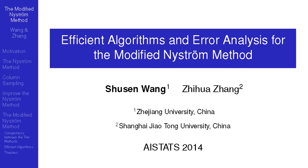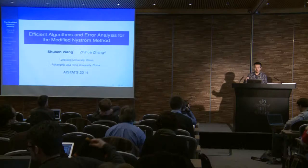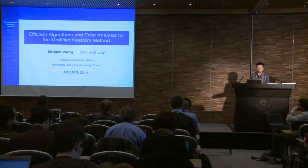I'm Shusen Wang from Zhejiang University. This is joint work with Zhihua Zhang. The title is 'Efficient Algorithm and Error Analysis for the Modified Nystrom Method.' The Nystrom Method is a kind of kernel approximation method for speeding up kernel methods. In our previous work, we proposed a variant called the Modified Nystrom Method. It is more accurate, but slower. In this paper, we propose two efficient algorithms to make the Modified Nystrom Method more practical, and we also provide some error analysis.